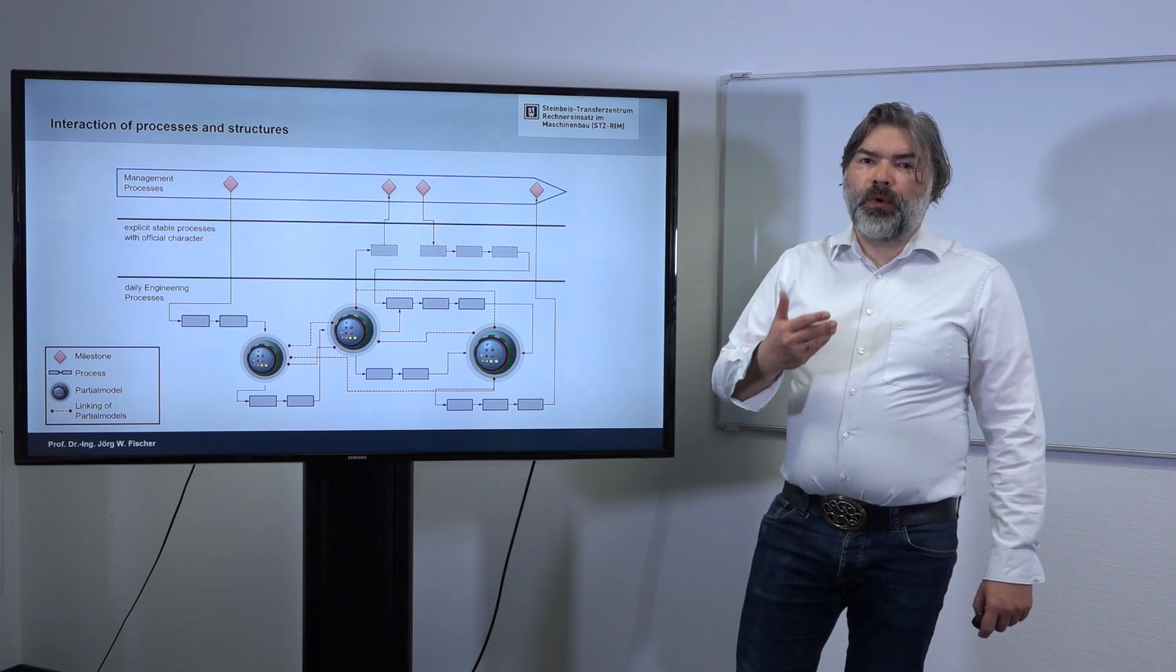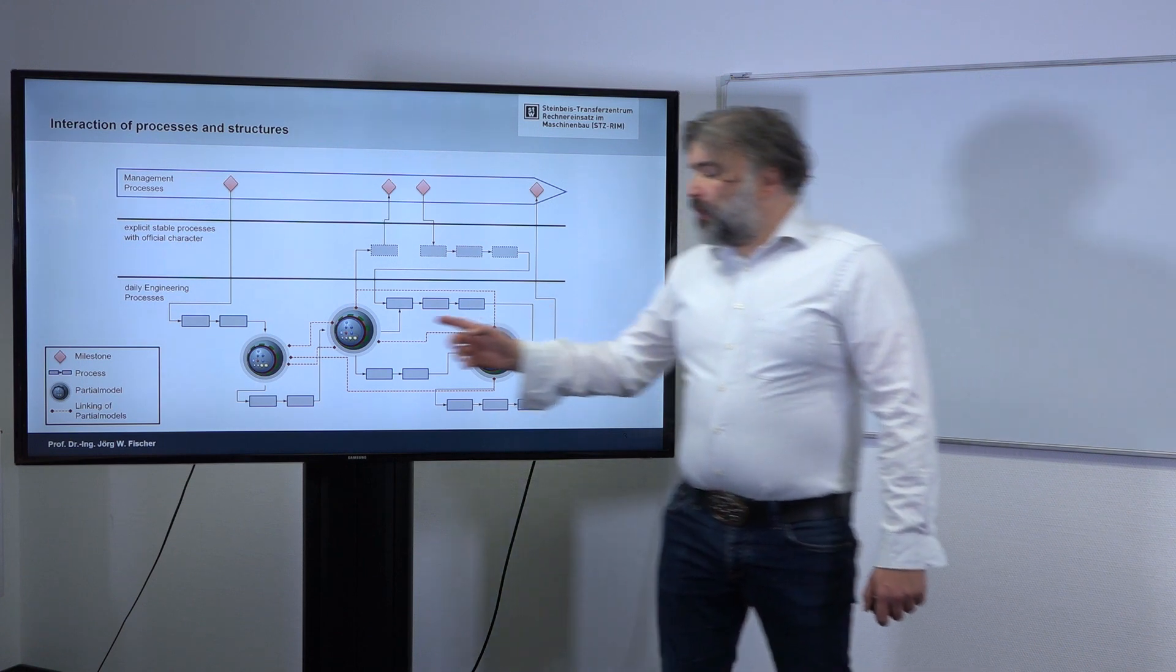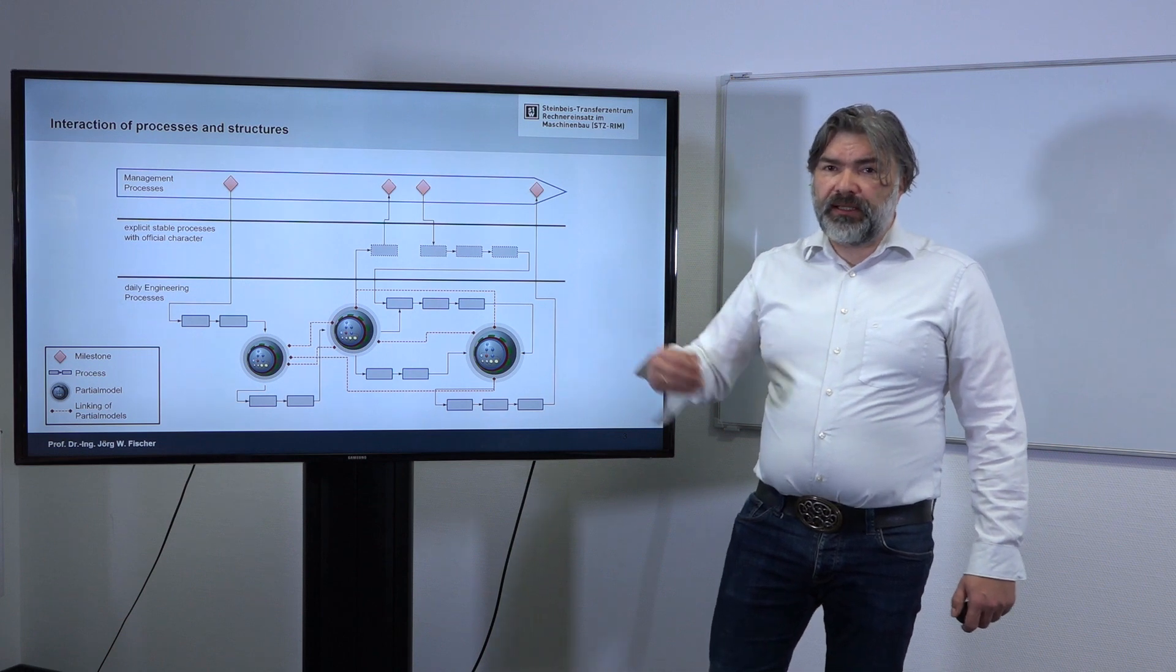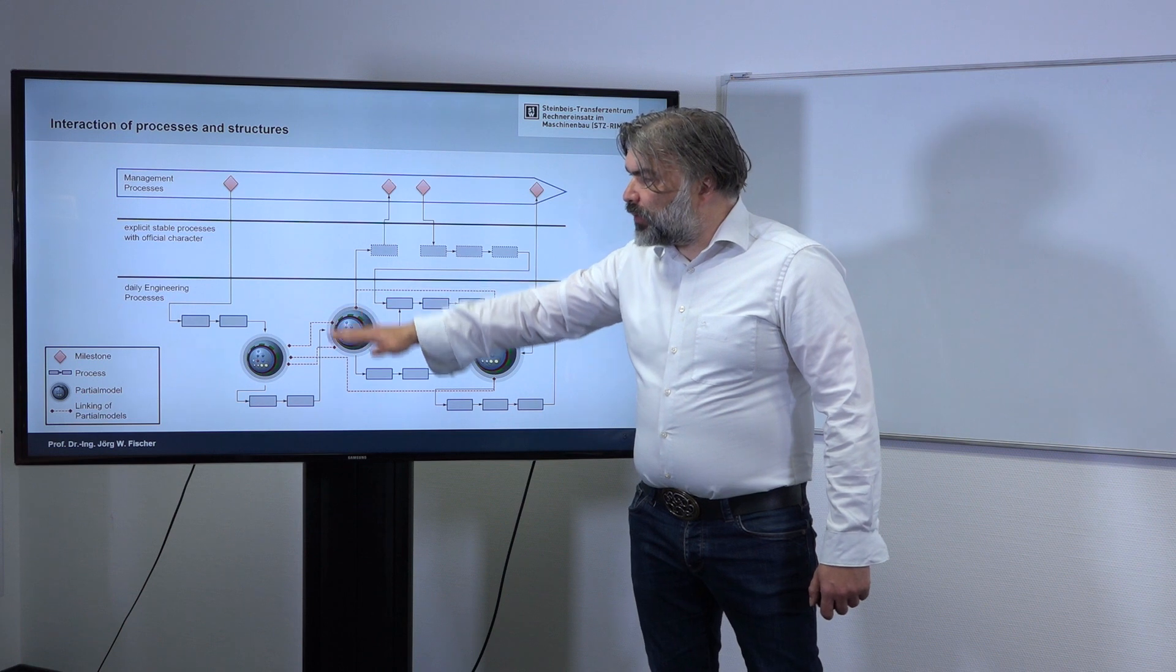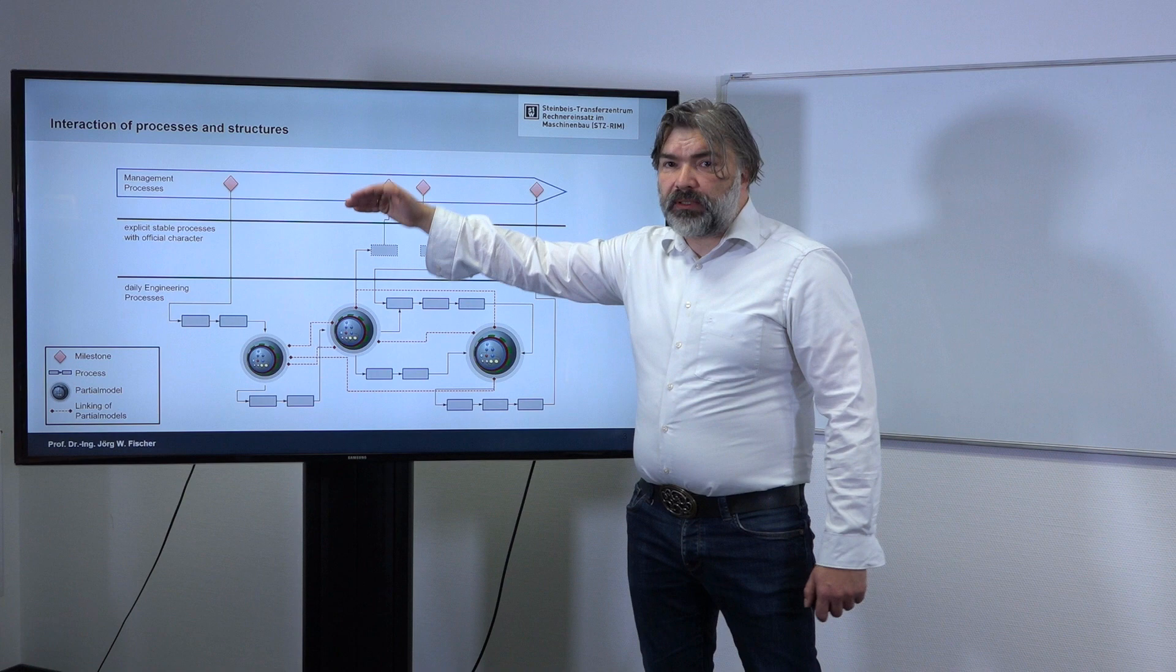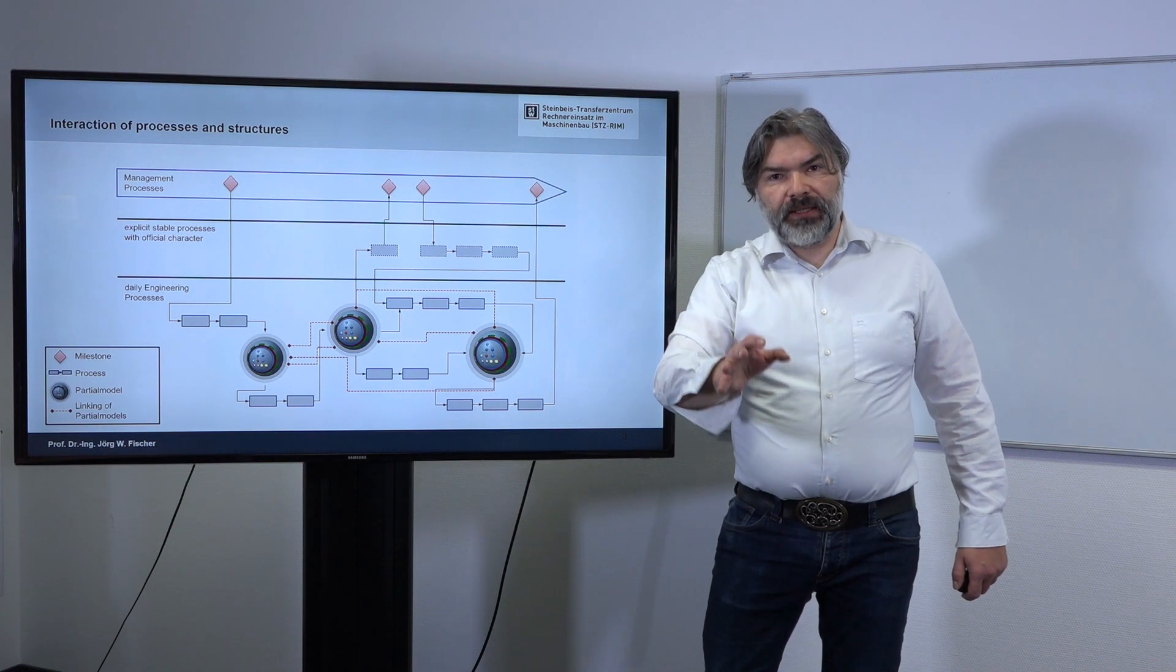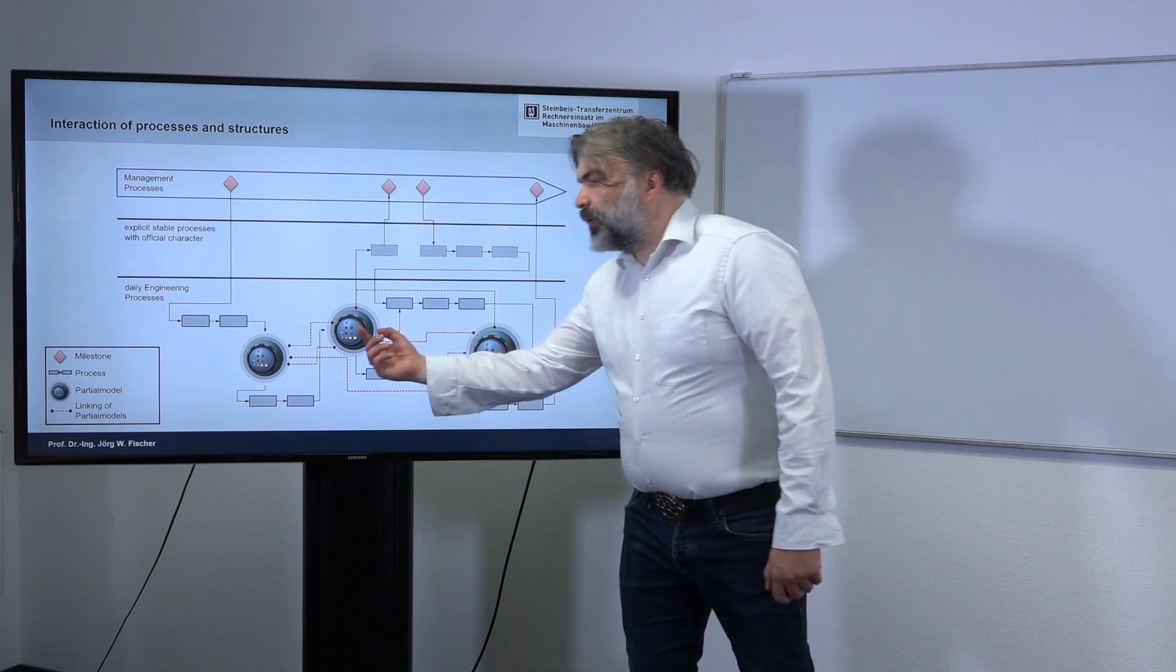Why have I shown you this? The background is that if you model or know the models, if you know the semantic of the model and how they interact, it is not so much necessary to model here the processes. In these layers you can model the processes and this is very important. In this layer, it is enough to think about the models and to what point in time, what kind of information has to be in the model and how they interact.